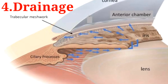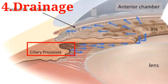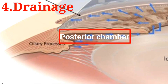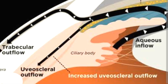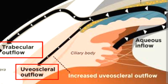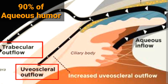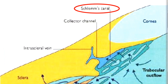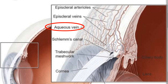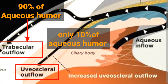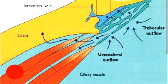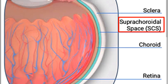Drainage. Aqueous humor, after being produced by the ciliary process of the ciliary body, fills most of the posterior chamber. From there it moves to the anterior chamber by passing through the pupil. Inside the anterior chamber, the aqueous drainage divides into two: trabecular outflow and uveoscleral outflow. 90% of aqueous humor is drained through the trabecular route by passing through the trabecular meshwork, to Schlemm's canal, to aqueous veins, and then to episcleral veins. Only 10% is drained through the uveoscleral route by passing through the ciliary body, to the suprachoroidal space, to venous circulation.